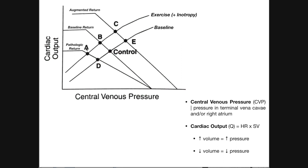Now for these three lines with negative slope: each one represents a different degree of venous return to the heart, really back to the right atrium. The one in the middle is a baseline level of venous return — this would be the venous return if nothing were done either to harm it or augment it. This line up here is augmented venous return, above the baseline level.